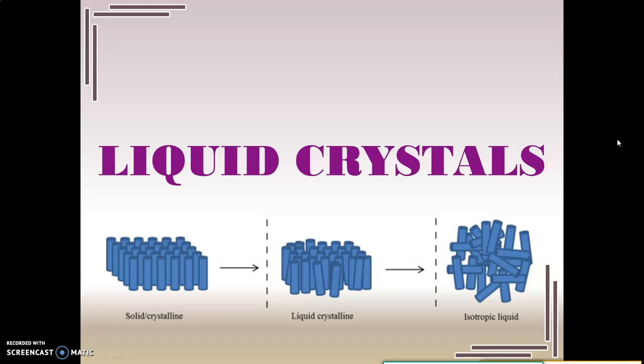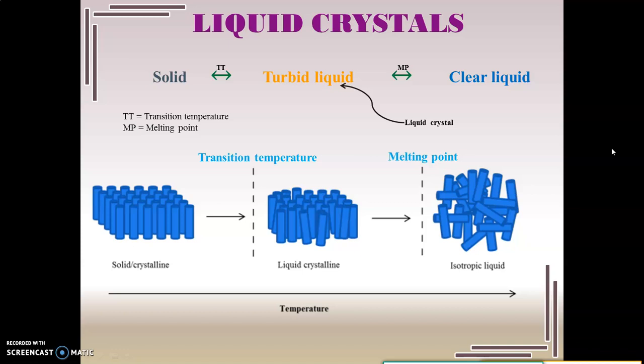In this video we will learn about an interesting state of matter: liquid crystals. Often, whenever we try to heat a solid — that means we provide some temperature to it — it changes to another state of matter which we usually refer to as the liquid state. But there are certain substances which actually do not show that sharp change from the solid to the liquid state of matter.